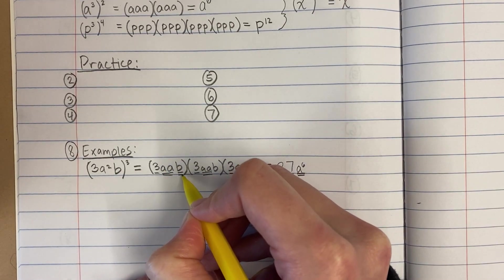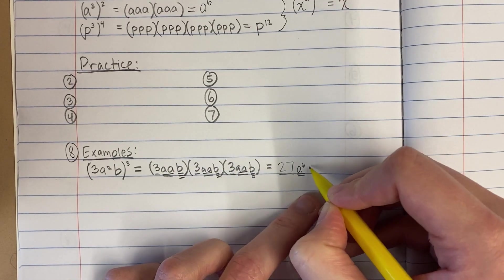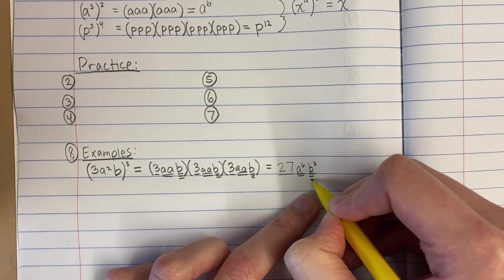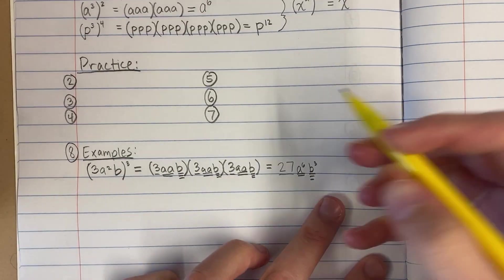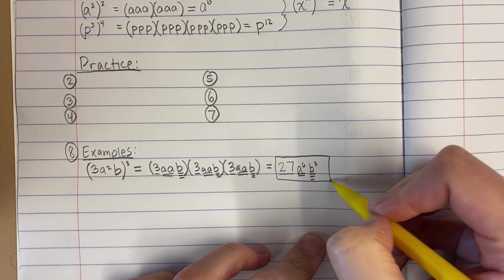And now I'm going to count the b's. I have 1, 2, 3 b's. Okay, so notice I just dealt with each piece separately, and this is my answer. 27 a to the 6th, b to the 3rd.